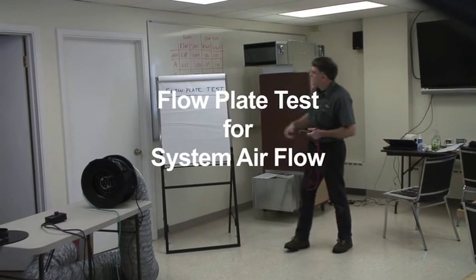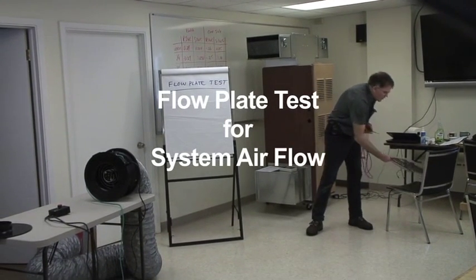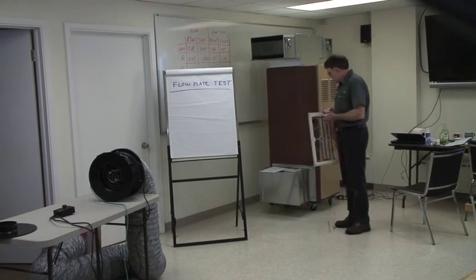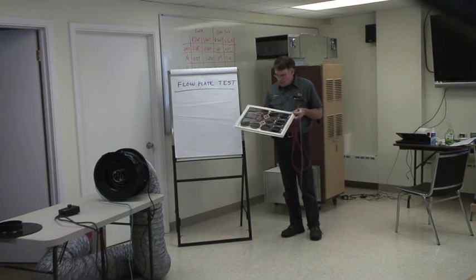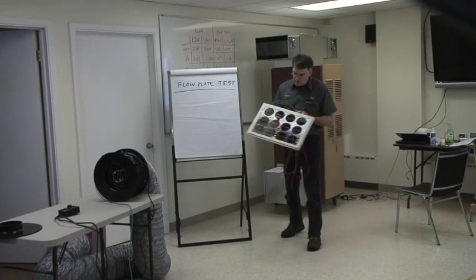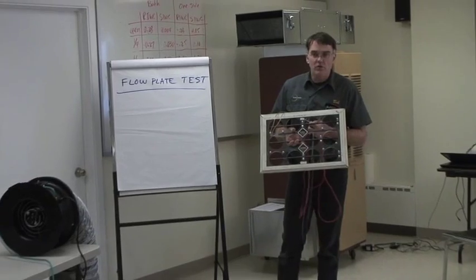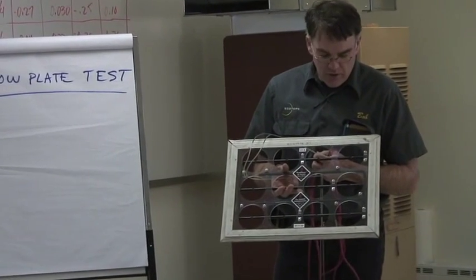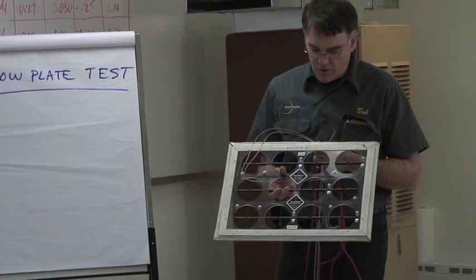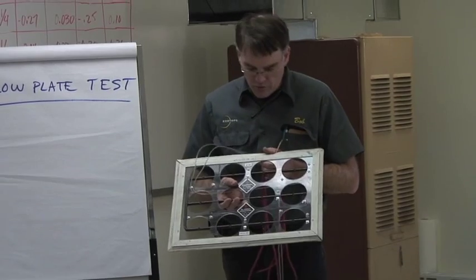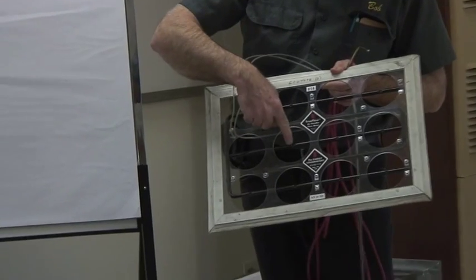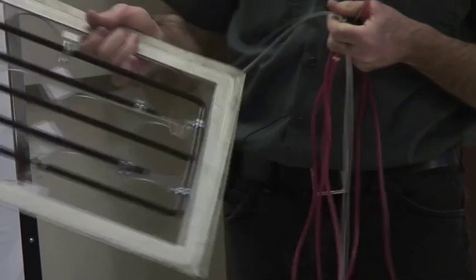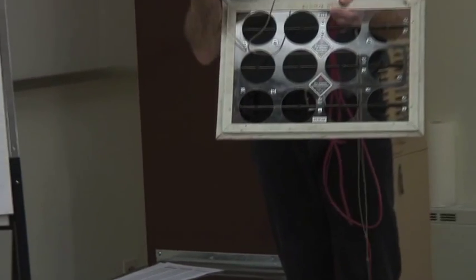The test we're going to perform now is a flow plate test to get system airflow through our central heating and cooling system. Flow plate is a generic name for a device such as this. This is probably the best known, the Energy Conservatory True Flow plate, the smaller of the two plates. This plate works on the principle of air moving across this device. There's holes here with pressure sensing taps on both the front and back. When we hook it up to our pressure gauge, we can convert it into cubic feet per minute or CFM.